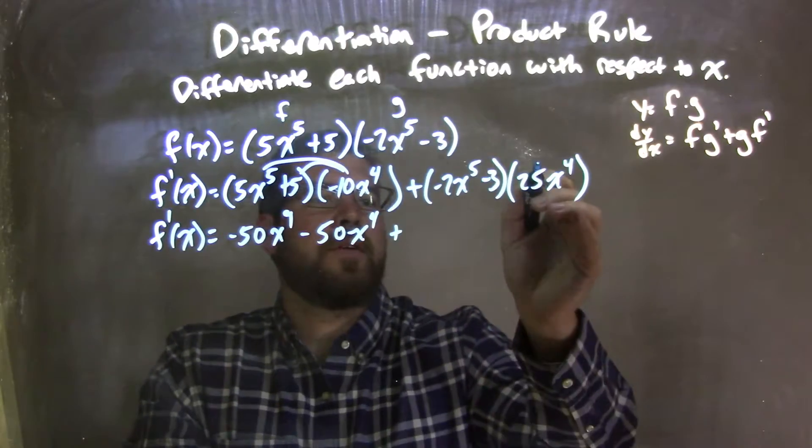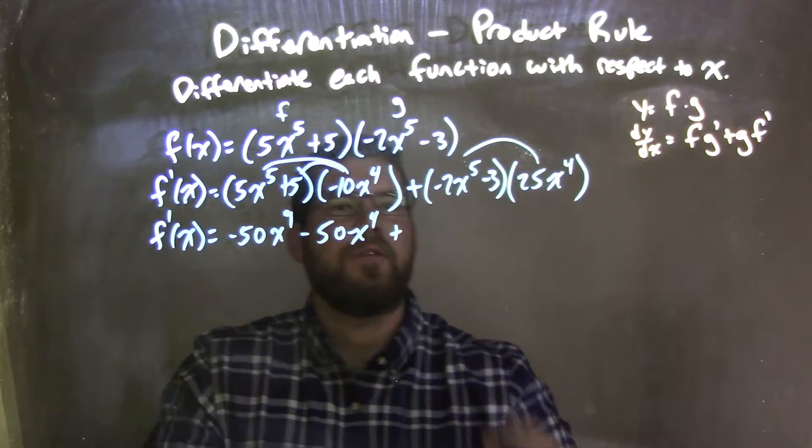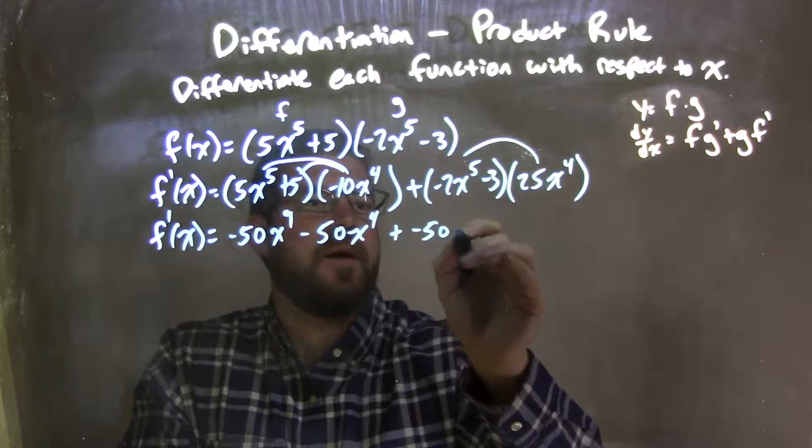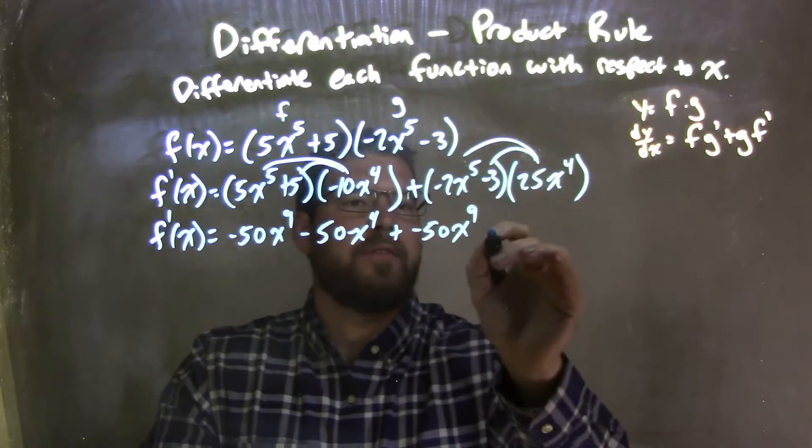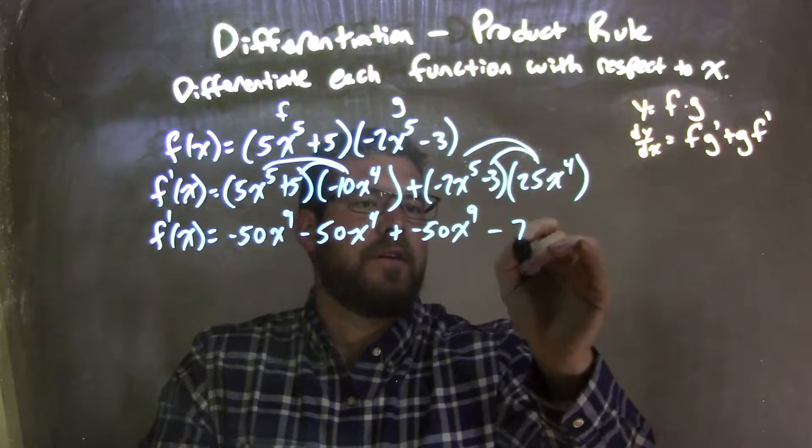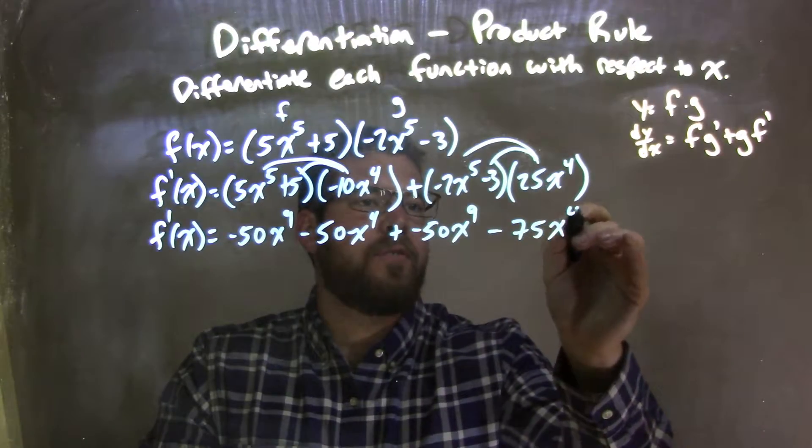Plus, distribute the 25x to the fourth out, so we have plus a negative 50x to the ninth. And 25 times negative 3 is a negative 75x to the fourth.